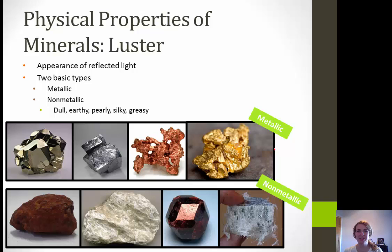For some other physical properties, we're going to talk about luster — the appearance of reflected light. We have two basic types: metallic and non-metallic. Metallic is pretty easy — does it look like a metal? If yes, it's metallic. If it doesn't, that's considered non-metallic, which includes dull, earthy, pearly, silky, greasy, and a whole variety.